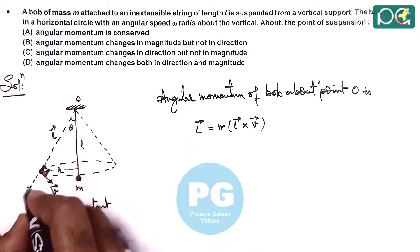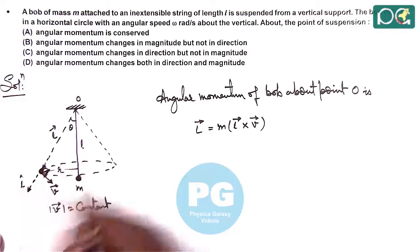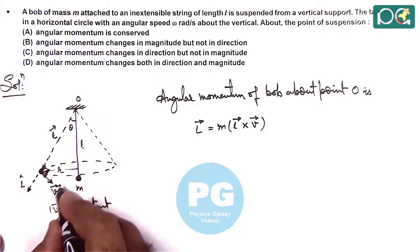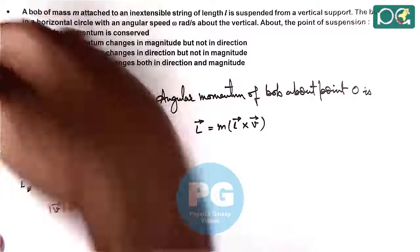But if we talk about its direction, here L vector is in this direction and this is the direction of L cap. This is the direction of velocity. So L cross V, we can see by right-hand thumb rule, it is in this direction. So at this point of suspension...